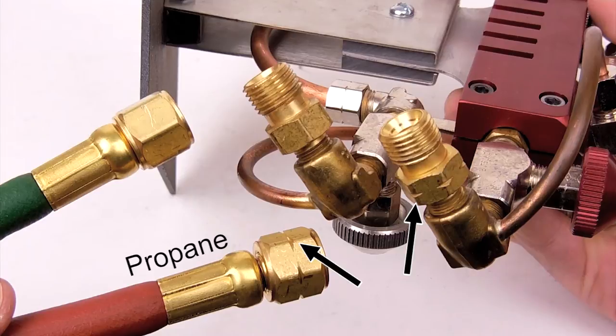All propane fittings are left-hand thread, meaning they tighten in a counter-clockwise direction. Propane fittings should only connect with other propane fittings.